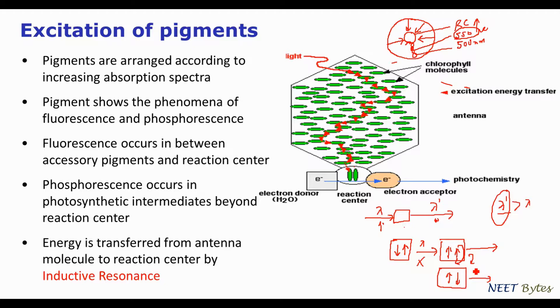Chlorophyll shows the phenomena of both fluorescence and phosphorescence. However, the energy is actually transferred by a process called inductive resonance — where molecules in close proximity vibrate and transmit energy. So while chlorophyll uses fluorescence for one-way channelization of energy from accessory pigments to reaction centers, the actual mode of energy transfer is always inductive resonance.